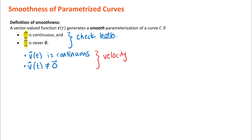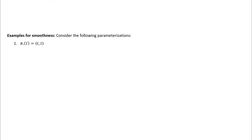The other important thing to understand — which our textbook is a little vague about — is that what we're really talking about is a particular parameterization of a curve being smooth. When you look at a graph of a curve you can't really see the parameterization, so it's important to understand that you need to see the parameterization in order to determine if it is smooth. I'm going to scroll up and we're going to look at a few different examples.